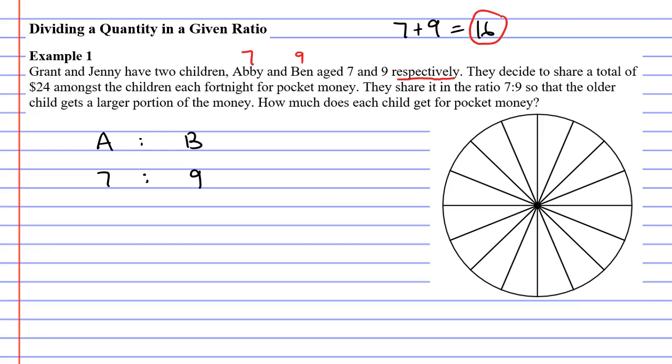Let's say Abby is red. She will get seven pieces of pizza: one, two, three, four, five, six, and seven.